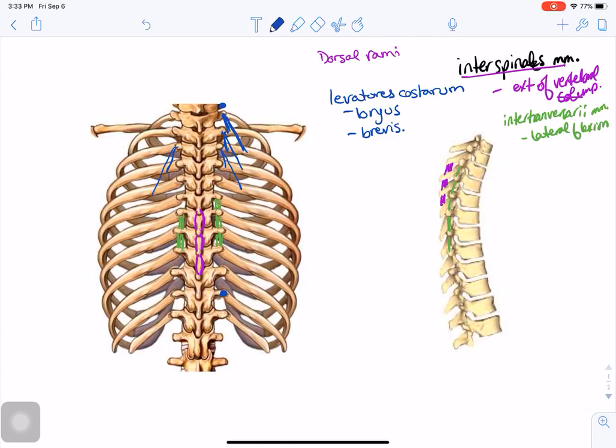These assist with elevating the ribs. Elevation of the ribs is important for ventilation and breathing. Those are the last of the intrinsic muscles of the back.